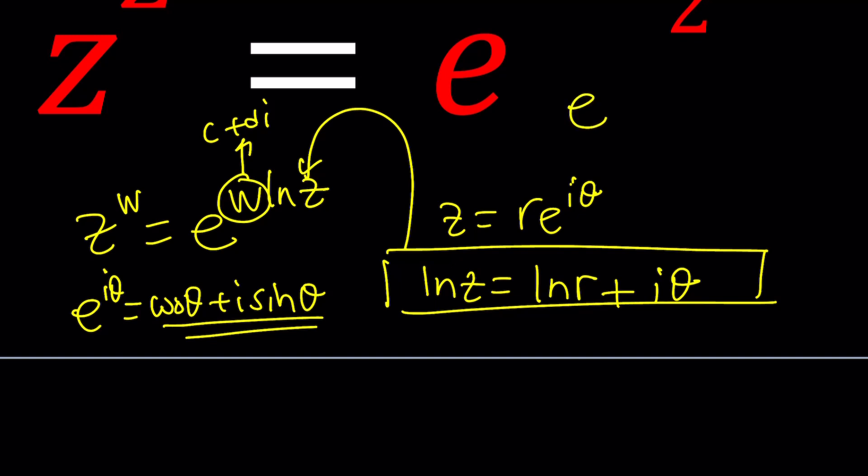Think about it this way: if you have something like e to the power a plus bi, this would be e to the a times e to the bi and this is going to be cosine b plus i sine b and this is just real you see.